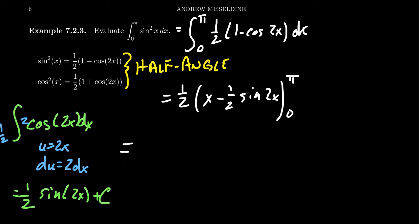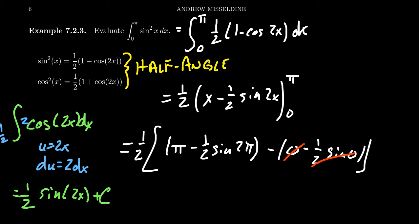If you plug in π, we're going to get 1/2 times (π - 1/2 sin(2π)) minus (0 - 1/2 sin(0)). Like I was mentioning a moment ago, sin(0) is equal to 0, and 0 is equal to 0. Now, sin(2π) is also equal to 0, so most of this stuff is just going to cancel out. And then you take the 1/2 times the π. We see the area under this curve is going to be π/2.